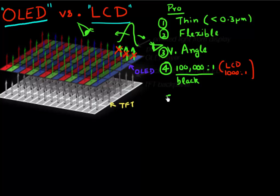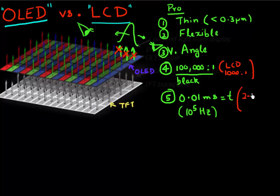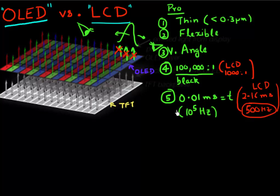Another advantage is that since these are based on light emitting diodes, which have a much faster response time, you can switch any of these pixels in 0.01 milliseconds. That gives a switching frequency of up to 10^5 hertz, versus a LCD-based display where it takes at least a couple of milliseconds to change the polarization of the liquid crystal, limiting frequency to less than 500 hertz. In gaming applications, especially 3D, OLED-based displays have much larger headroom and a much faster response time.